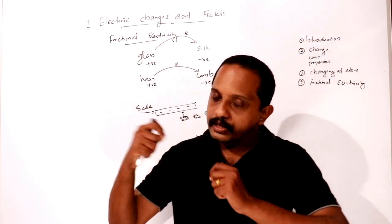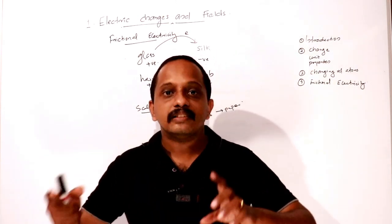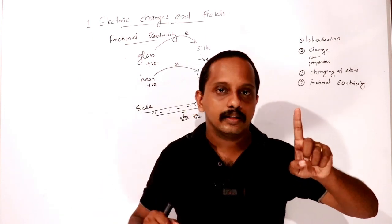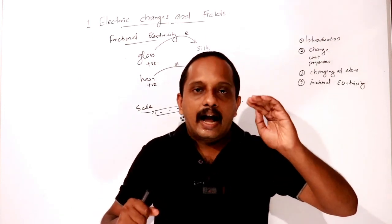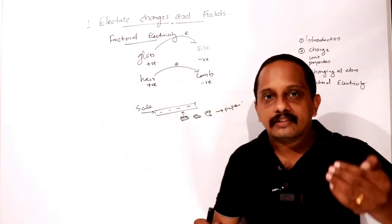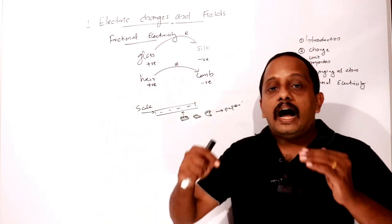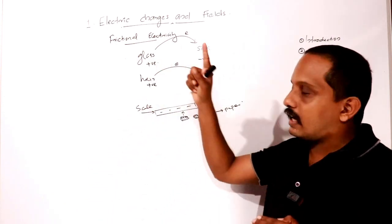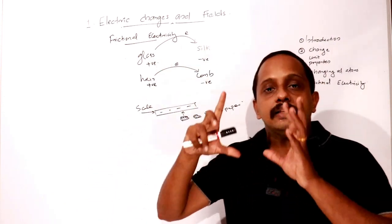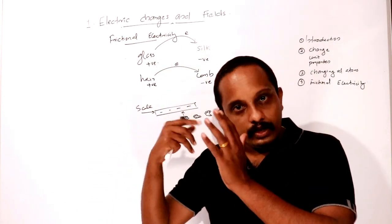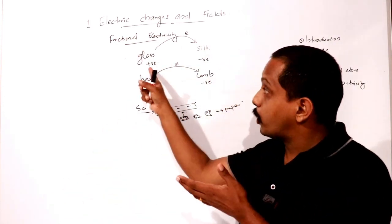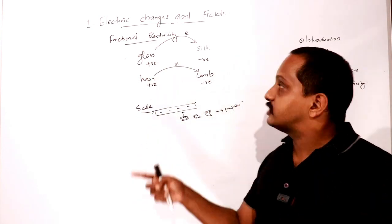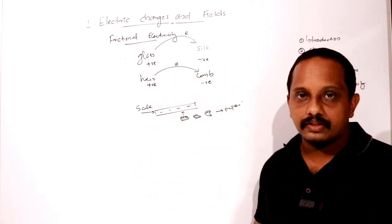In daily life, electron may transfer from one material to another during rubbing. The material which loses electrons becomes positively charged and the material which gains electrons becomes negatively charged.